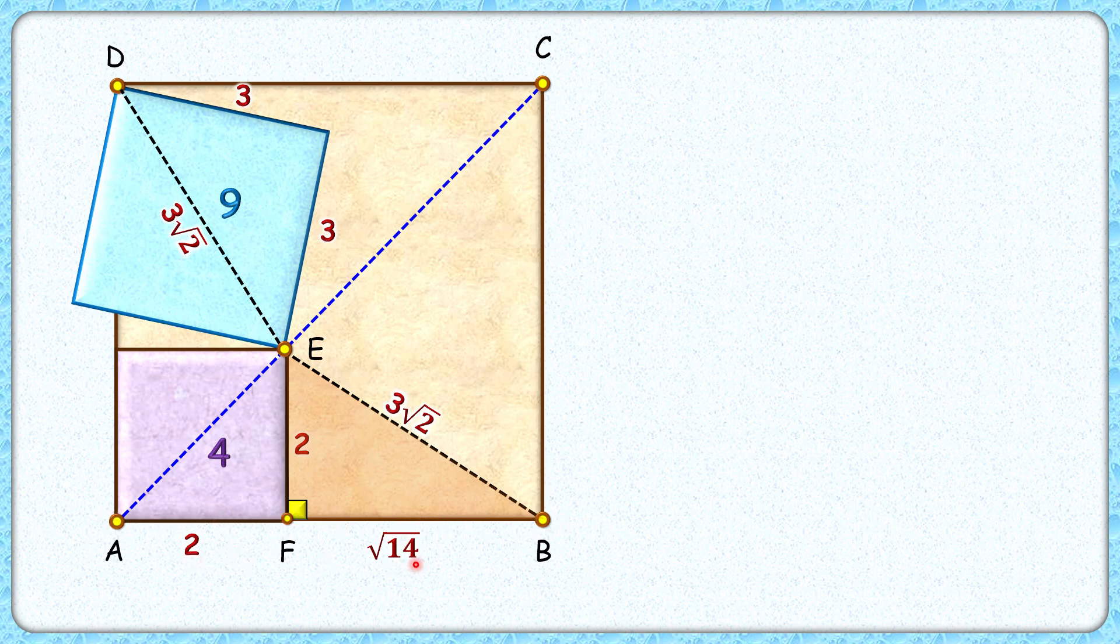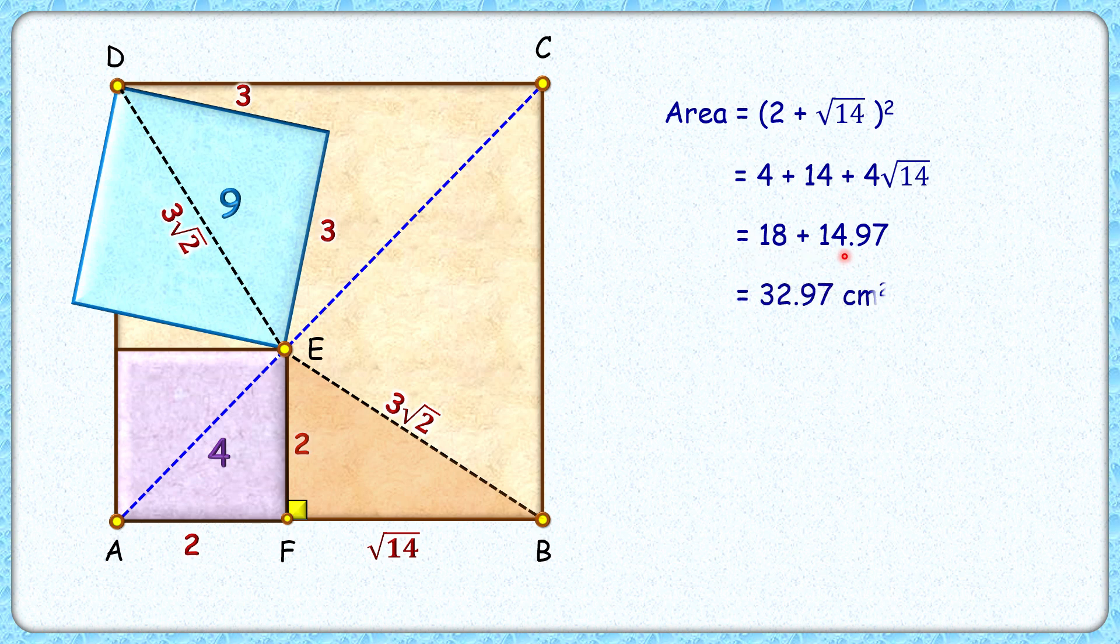Now for the brown square, the side length is 2 + √14. So area of the brown square is (2 + √14)². Opening up the bracket and putting the value of √14 as 3.74 and solving it, we will get the area of the brown square as 32.97 centimeters squared, and that's our answer.